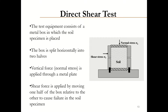The direct shear test is quick and inexpensive, but the shortcoming is that the soil sample fails on a designated plane, which may not be the weakest plane. The direct shear test can be used to determine the shear strength of both cohesive and non-cohesive soil. The test equipment consists of a metal box in which the soil sample is placed, and the box is split horizontally into two parts. A vertical force is applied through a metal plate, and shear force is applied by moving one half of the box relative to the other. One part of the box remains fixed while we move the other part, and the soil fails along this plane.